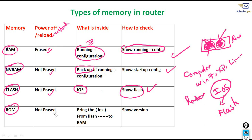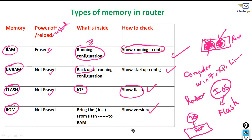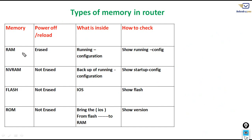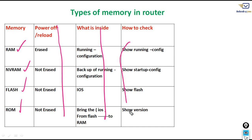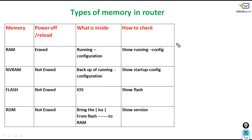ROM is also non-volatile — if power is off, the content is still there. The job of ROM is to bring the IOS from Flash into RAM when the router boots. So ROM loads the IOS from Flash to RAM. To check the content of ROM, you type: show version. Summary: RAM, NVRAM, Flash, and ROM — each has different contents, different volatility, and different verification commands.